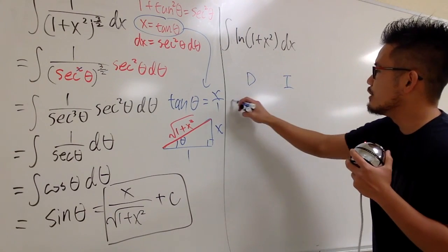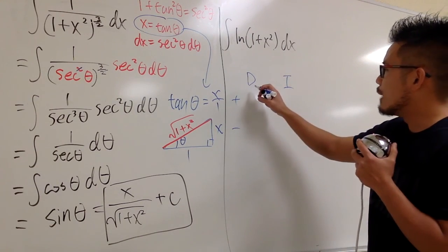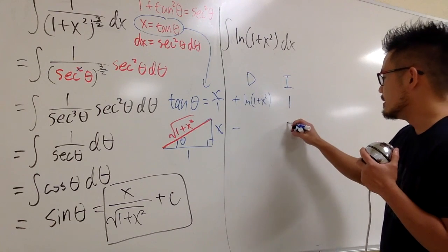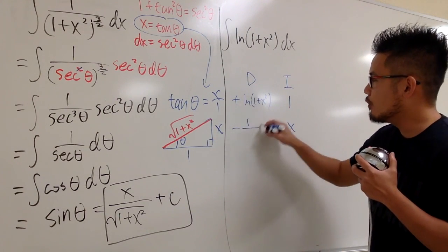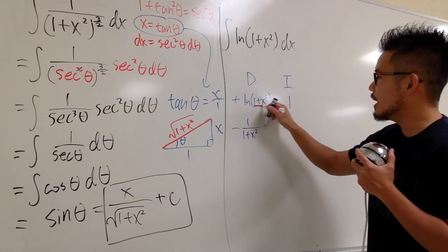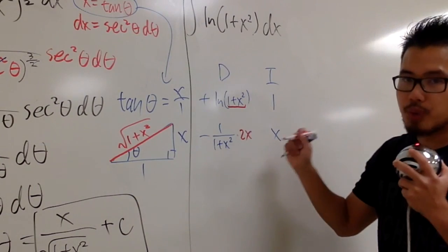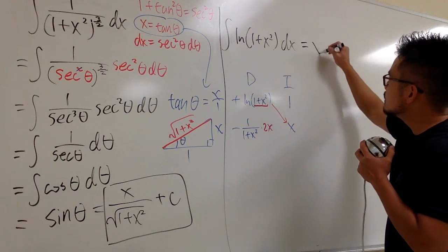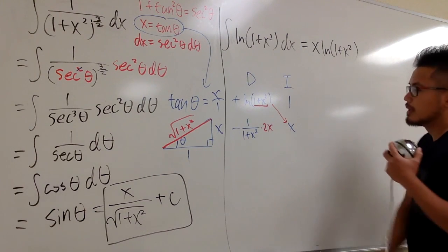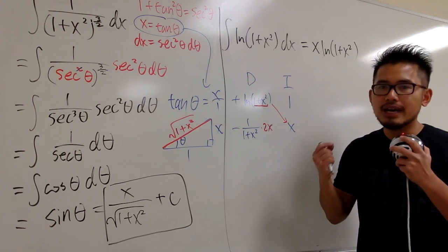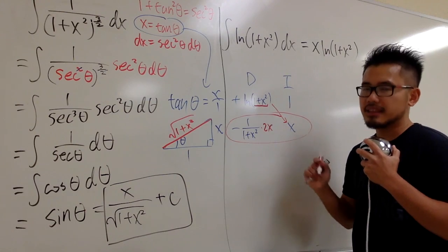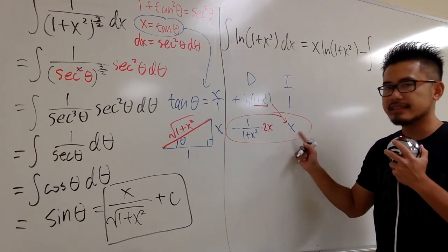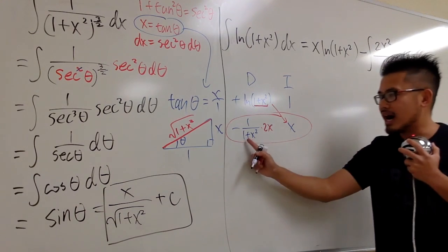Let's do integration by parts with the DI method. We differentiate ln(1 plus x squared) and integrate 1, with plus and minus signs in between. Integrating 1 gives x. Differentiating ln(1+x²) gives 1 over (1+x²), times 2x from the chain rule. The product of the diagonal gives the first part of the answer: x times ln(1 plus x squared). Then we subtract the integral of 2x times x over 1 plus x squared, which is 2x squared over 1 plus x squared.